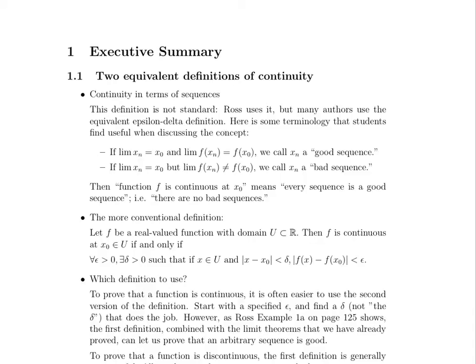So the first one is a definition that is used in Ross using sequences to define continuity. And it is not the standard definition. Most authors will use the second definition we talk about, but let's talk about the one in Ross first. Here is the terminology that he uses. He says if the limit of the sequence x sub n is equal to x naught, note that that's a sequence in the domain of a function, and if the limit of f of x sub n equals f of x naught, we call x sub n a good sequence. So we have the sequence in the domain that is x sub n, its limit is x naught, and then it matches to the limit of the function values of the terms of that sequence, and that approaches f of x naught.